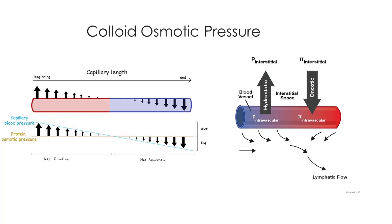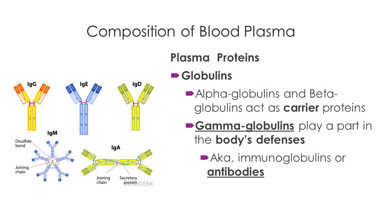We have proteins like albumin that can act as carriers, but they're primarily there to be solutes. We also have a class of proteins called globulins — alphas, betas — grouped based on their function, and many are carriers much like albumin. But the ones most people are familiar with are the gamma globulins.